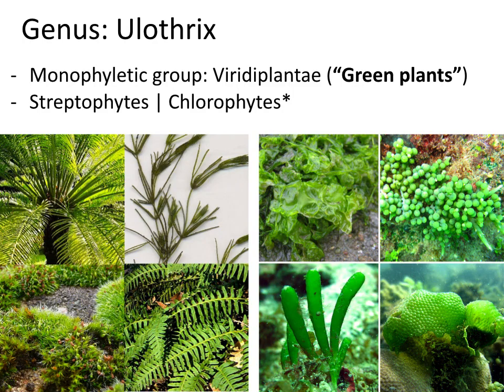Species in the genus Eulothrix belong to a larger monophyletic group called Viridiplantae, which means and is commonly known as green plants. Green plants are broken up into two clades. Streptophytes, that include our everyday land plants, are sometimes called true plants, which you can see on the bottom left of this slide. Streptophytes also include some species of the closely related green algae.